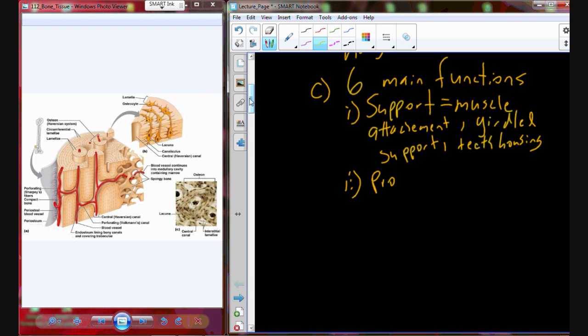The skeletal system is also going to provide protection. Much of our body is going to be enclosed within some portion of the skeletal system. We have the thoracic cavity protected by the ribcage, the spine and the brain protected by the cerebral and spinal cavities, each encased in bones. The protection is protecting visceral organs.